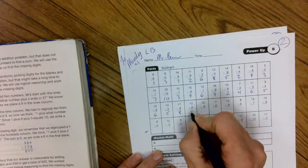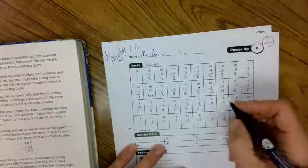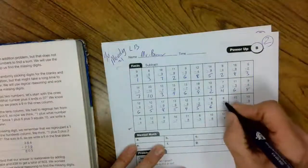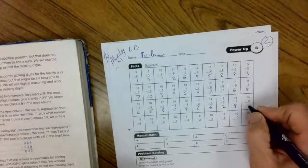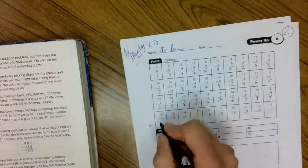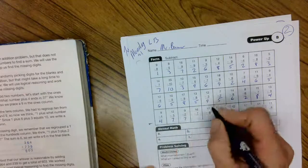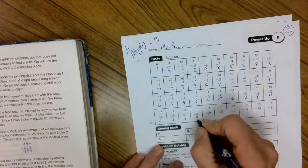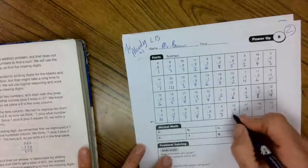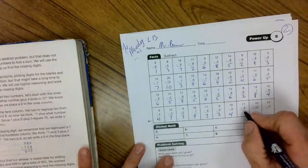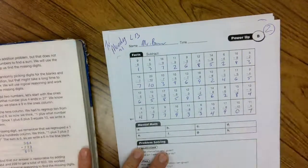10 minus 5 is 5. 17 minus 9 is 8. 13 minus 8 is 5. 12 minus 3 is 9. 7 minus 2 is 5. 14 minus 8 is 6. 8 minus 6 is 2. 15 minus 7 is 8. 13 minus 9 is 4. 8 minus 4 is 4. 12 minus 5 is 7. 9 minus 2 is 7. 16 minus 7 is 9. 11 minus 8 is 3. 6 minus 3 is 3. 10 minus 6 is 4. 17 minus 8 is 9. 10 minus 10 is 0. 11 minus 7 is 7.